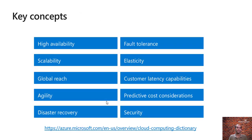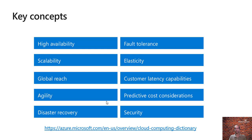Now let us take a look at key concepts involved in the cloud computing world. First is high availability. It is the operational uptime of a service over a period of time. Azure and other cloud computing providers provide an SLA — that is, a service level agreement — for every service or resource in the cloud, to give you information in advance about the operational uptime of a service. You can achieve high availability via redundancy as well as replication of your services or resources across locations or sites.